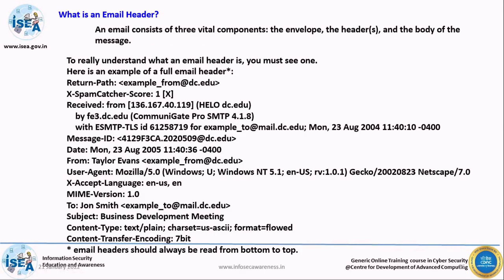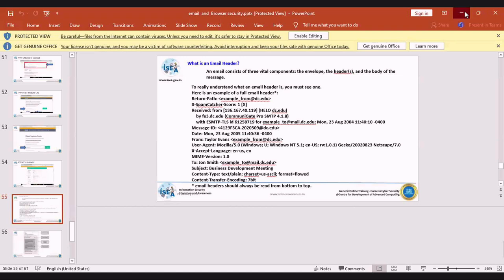Another useful tool is checking the email header to differentiate between genuine and malicious senders. In your email client, click the three-dot menu on any email and select 'Show Original' — this reveals the full email header, allowing you to verify the actual source of the email. You can use this to confirm whether an email is legitimate or a phishing attempt.